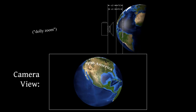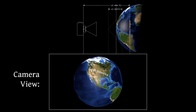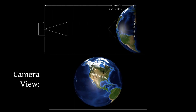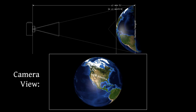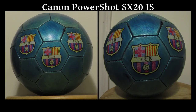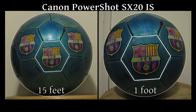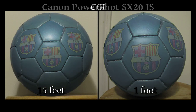Commenters pointed out that the video was CGI. That's true! Here are two pictures of a soccer ball taken from about 15 feet and one foot. There you go — it's very not different from CGI.